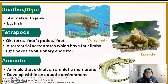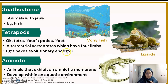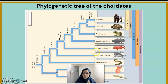Gnathostomes are animals with jaws, such as bony fish. Tetrapods — from Greek 'tetra' meaning four and 'podos' meaning foot — are terrestrial vertebrates with four limbs. Even snakes, whose evolutionary ancestors had four limbs, are tetrapods. Amniotes are animals that have an amniotic membrane and develop within an aquatic environment inside the egg, for example archaeopteryx. So we can see how vertebrates are divided into chordates, gnathostomes, tetrapods, and amniotes.